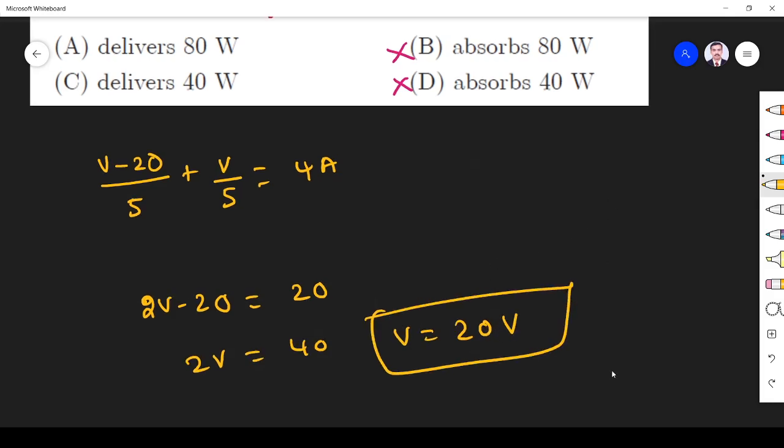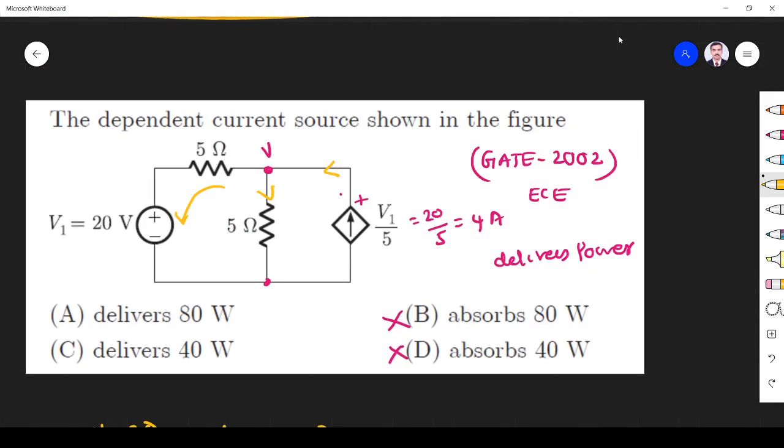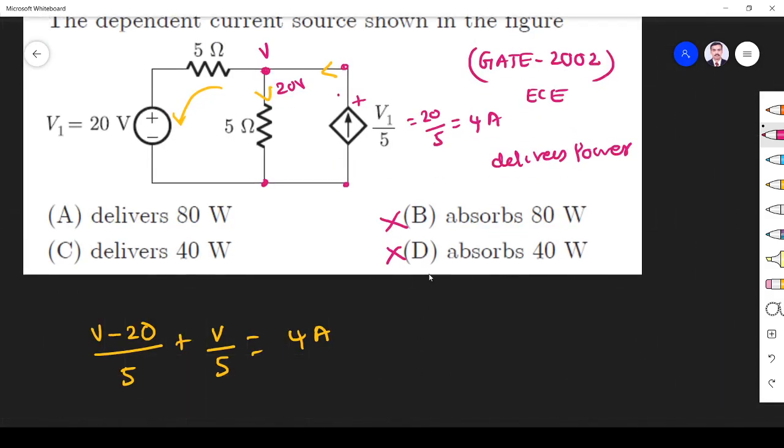So voltage across this terminal is 20 volt. So we found it. This is 20 volt means the voltage across this terminal is also 20. So we got V value. I is 4 ampere.